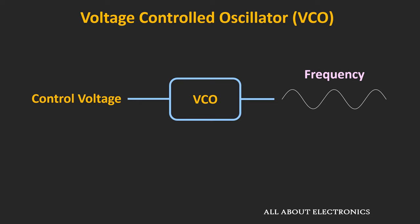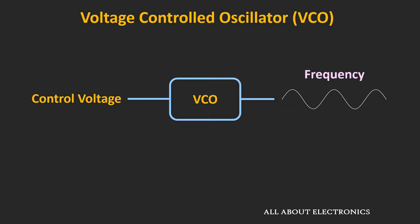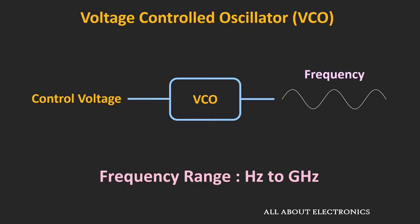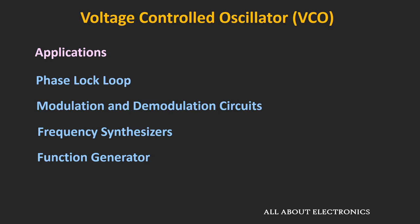In fact, if we want to tune the VCO using a microcontroller, that is also possible. For example, if a digital-to-analog converter is interfaced with the microcontroller, then the output of the DAC can be changed, and by applying that voltage to the VCO, it is possible to change the frequency. Commercially available VCOs can work from a few Hz to even tens of GHz, and because of that they are widely used in communication applications — in modulation and demodulation circuits, as well as in frequency synthesizers and function generators. These VCOs are also an integral part of the phase-locked loop.